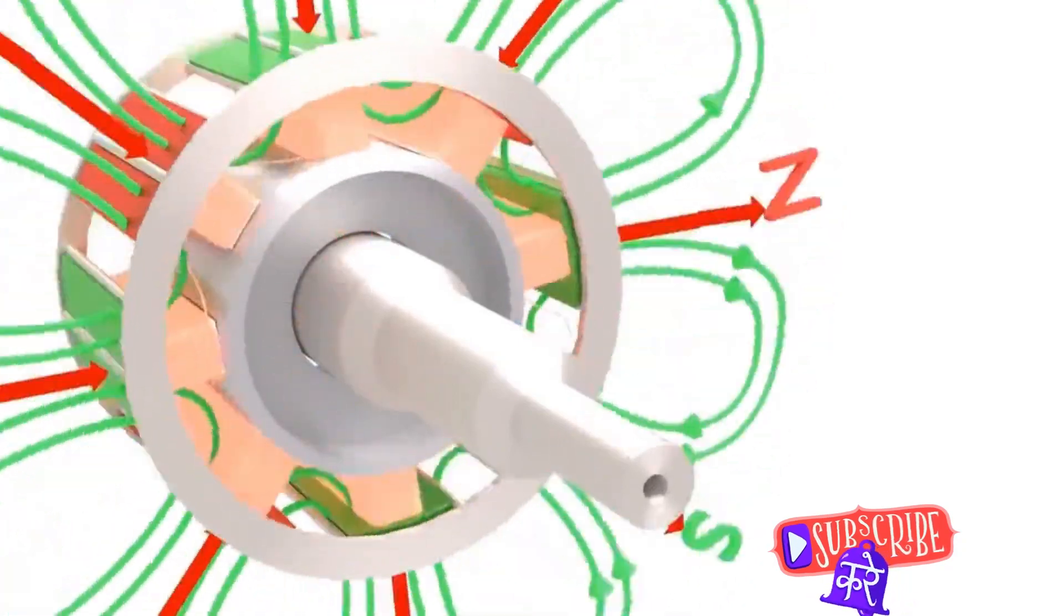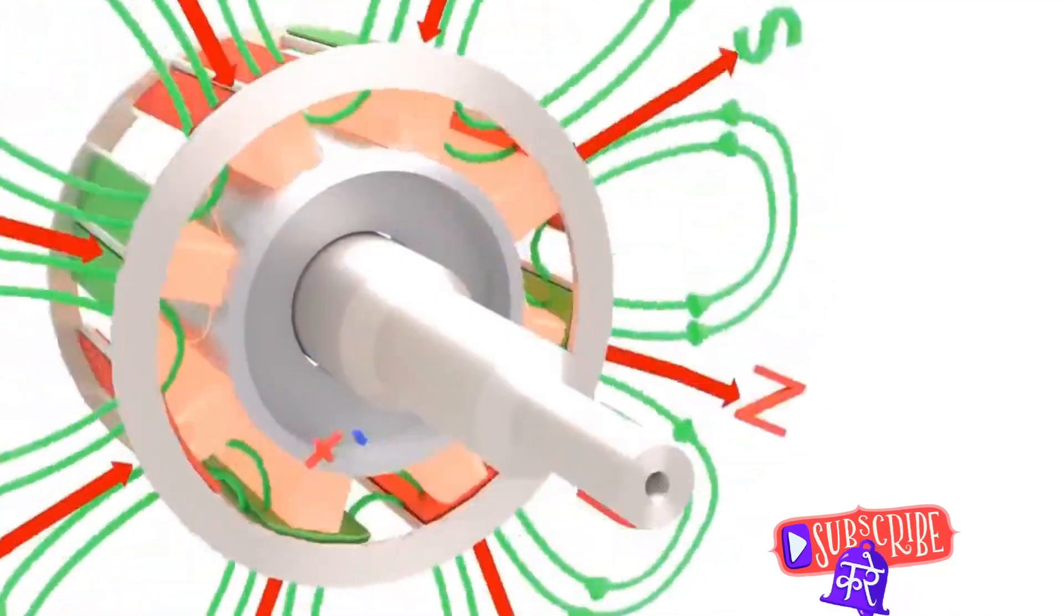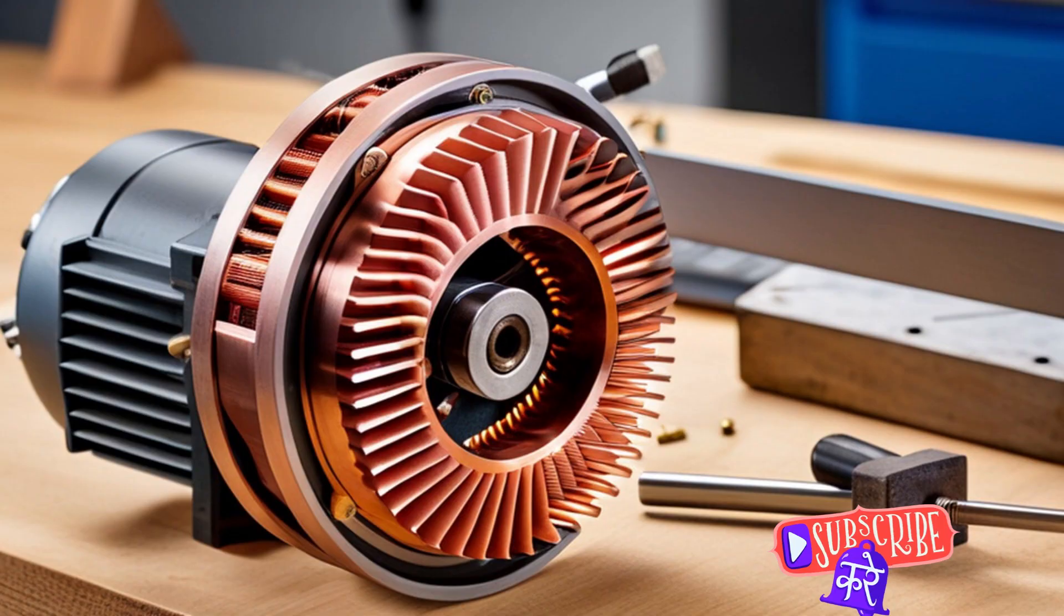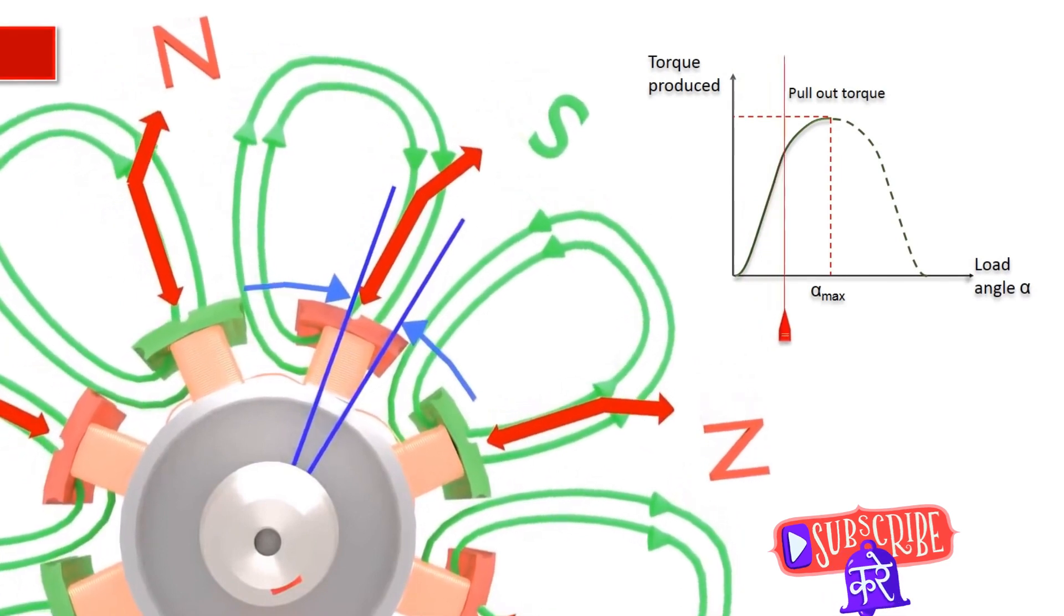Now, let's add a twist to our dance. The rotor doesn't always manage to keep up with the magnetic field. This is where another ingenious piece of engineering comes in: the slip. It's a tiny difference in speed between the rotor and the magnetic field, and it's what allows the motor to start and generate torque.